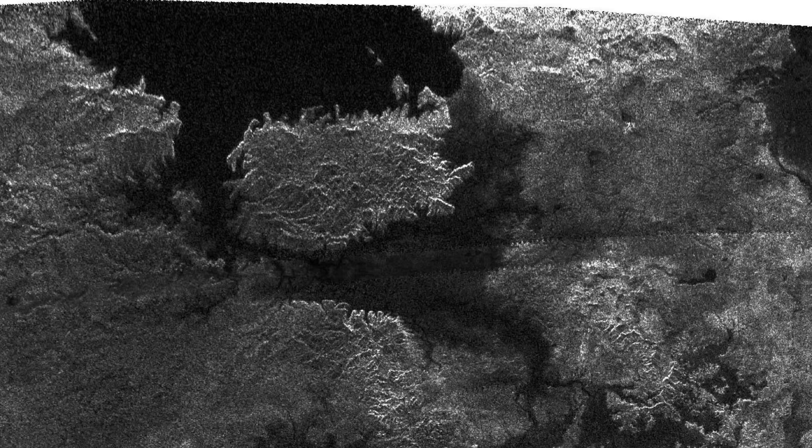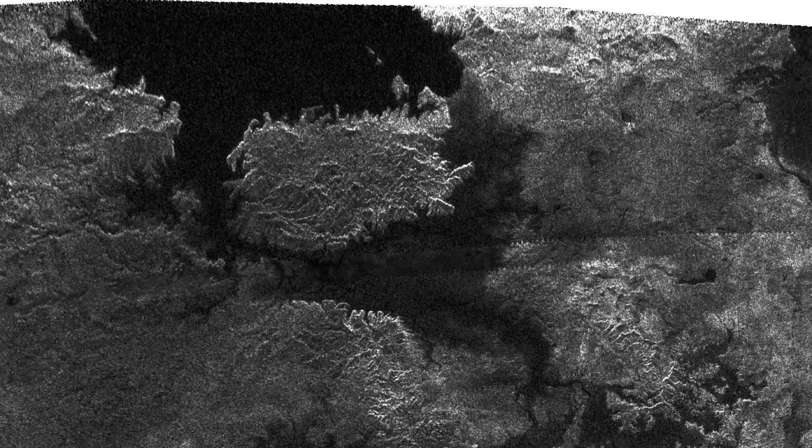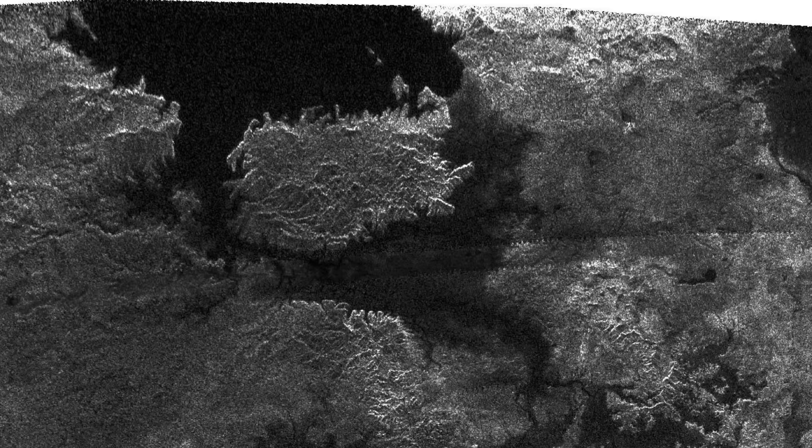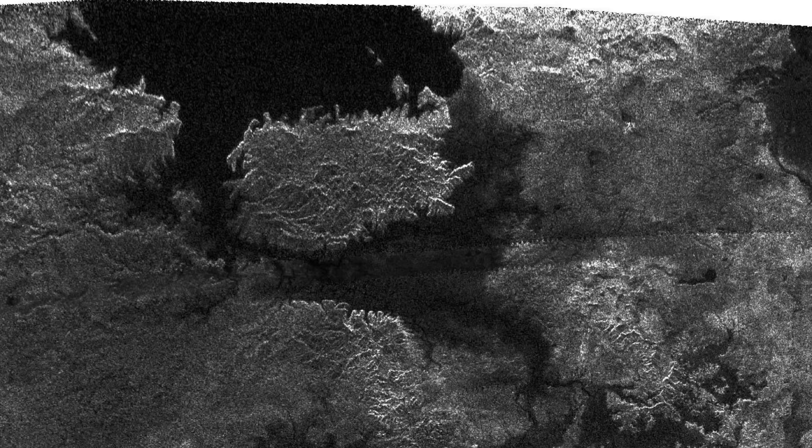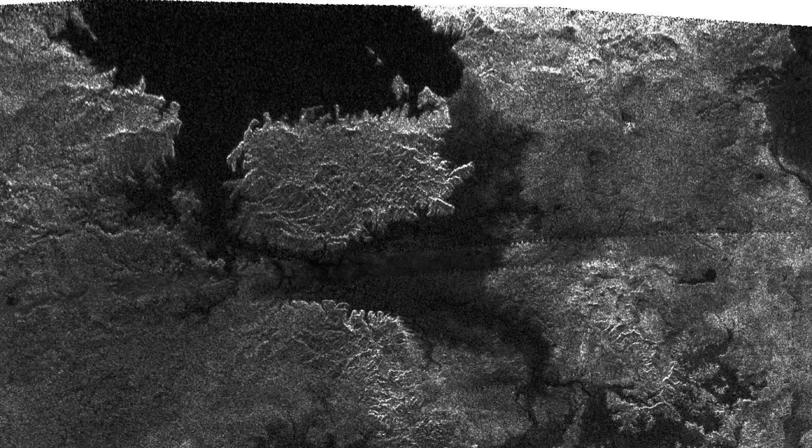This is the surface of Saturn's moon Titan through SAR. You'll notice a huge black splotch at the top. That's a methane lake. The reason it's black is because the radar sensor is getting zero data from this location. The radar beam goes down, reflects off of the flat surface, and disappears into space without ever returning to the radar.